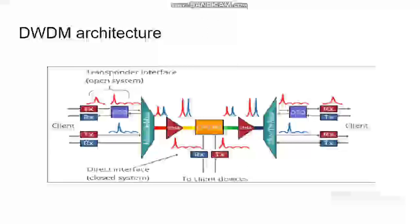DWDM architectures are the same as WDM systems. These are possible in both unidirectional and bidirectional configurations. The figures shown here are of bidirectional DWDM architecture. In bidirectional DWDM architecture, both transmitting and receiving of signals are possible at both sides. The process is the same as WDM systems.